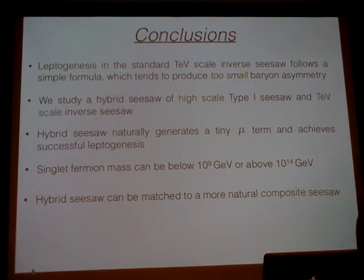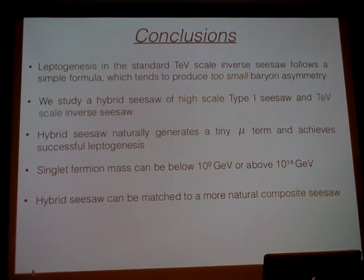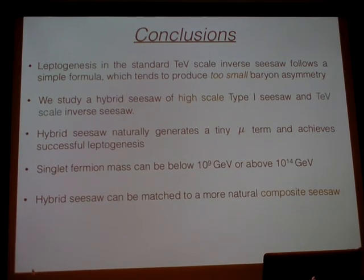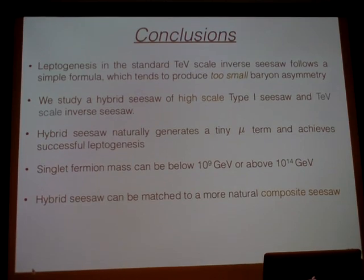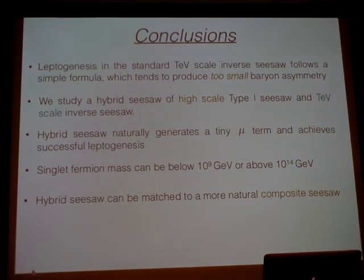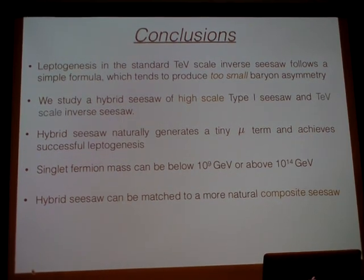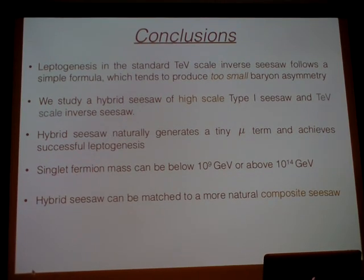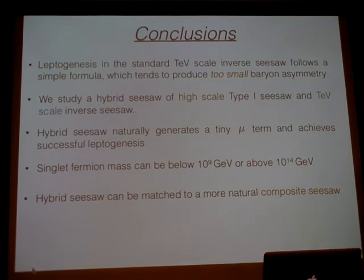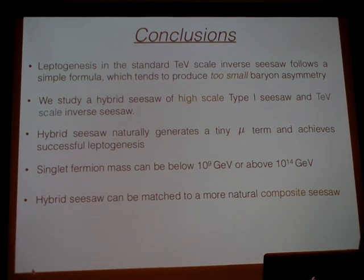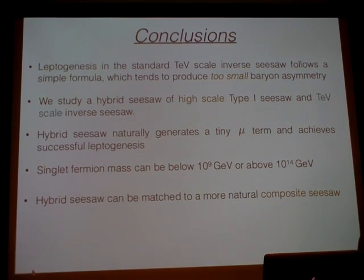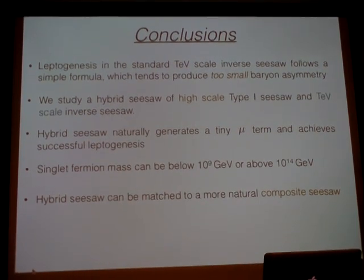In the Q&A: All scalars and new fermions are gauge singlets, and the main advantage of the hybrid seesaw is solving the puzzles of the inverse seesaw — why μ is so small and why leptogenesis does not work. By adding the high-scale module, one solves the μ term naturally and gets successful leptogenesis. The only remaining organizational issue is the hierarchy of masses between μ and the TeV scale, which is dynamically addressed.